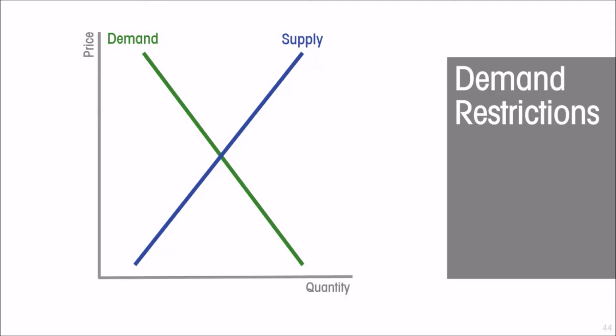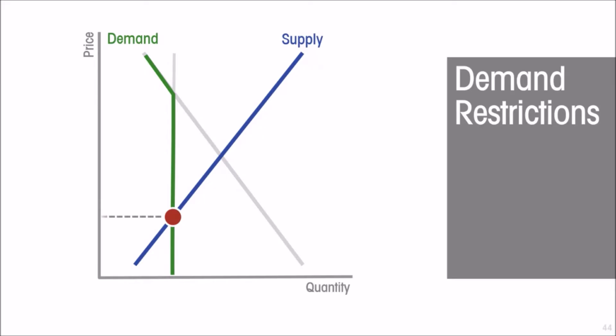Let us now turn to see what a quantitative restriction looks like on the demand side. For it to be binding, it has to be less than the quantity at which the market would clear. As we did for the supply side, the actual demand curve becomes irrelevant for any quantity greater than the quantitative restriction — the demand curve is only relevant for quantities less than the quantitative restriction. That green line represents the effective demand curve in this market, and the market clears where the effective demand curve and supply curves intersect, at a price which is less than what would have obtained in the absence of the quantitative restriction.